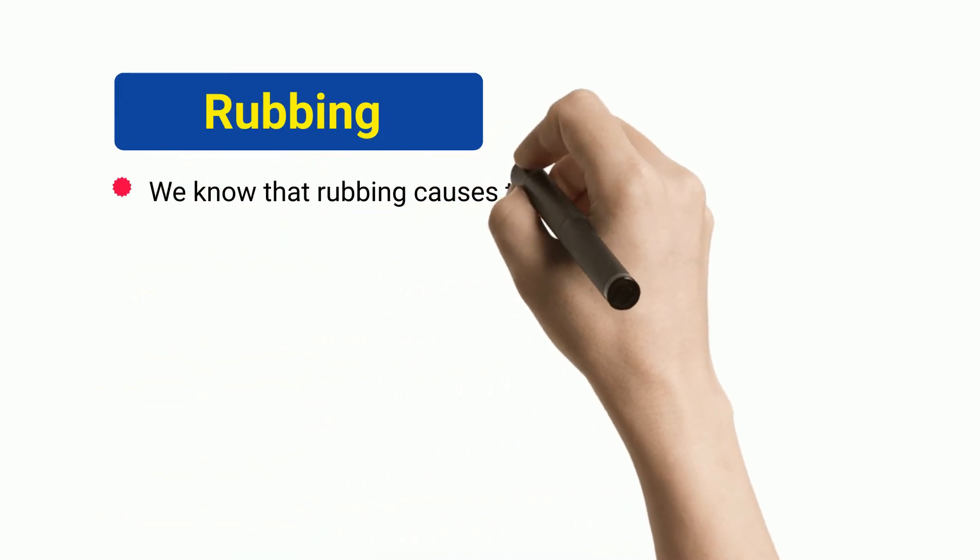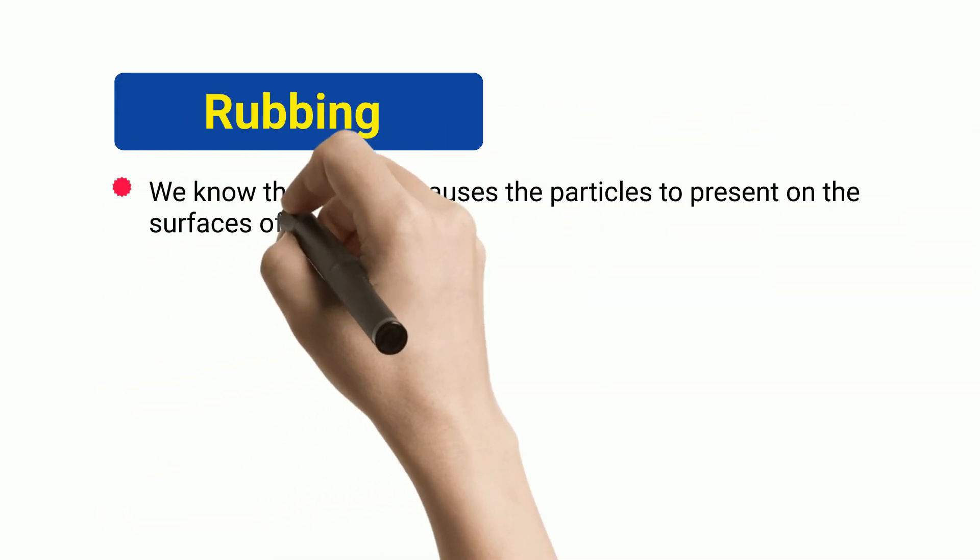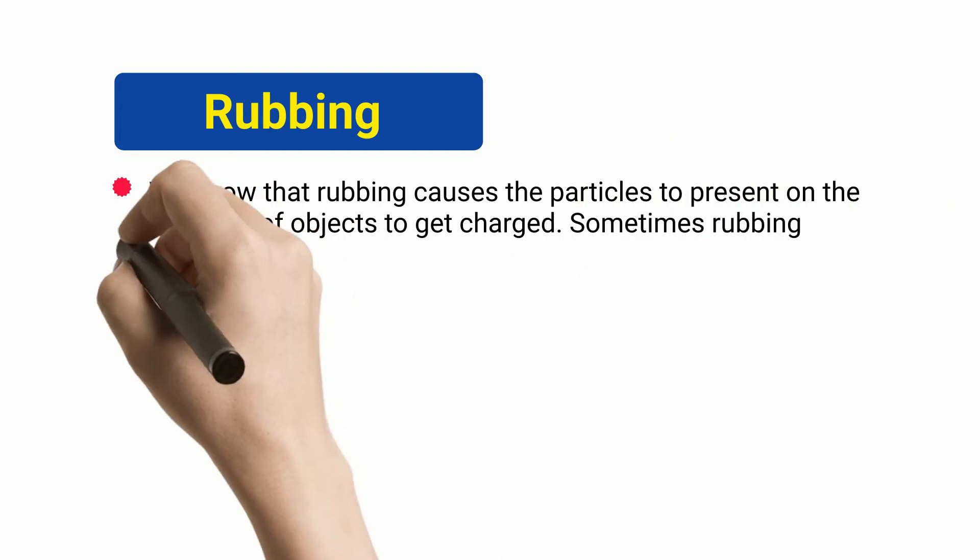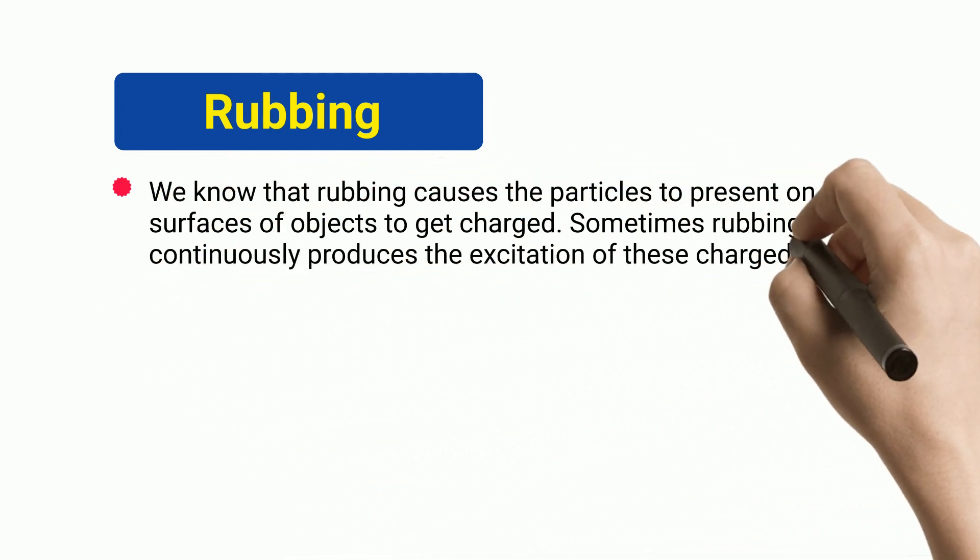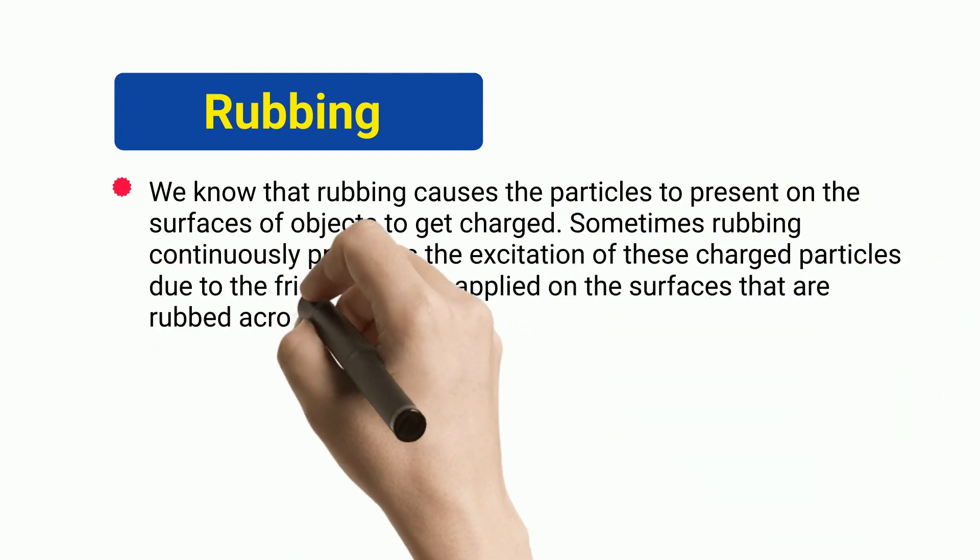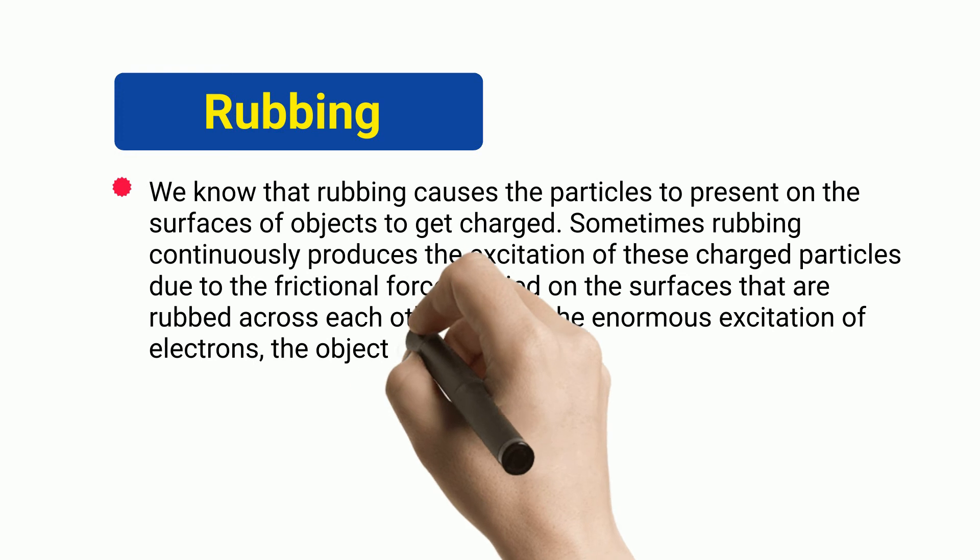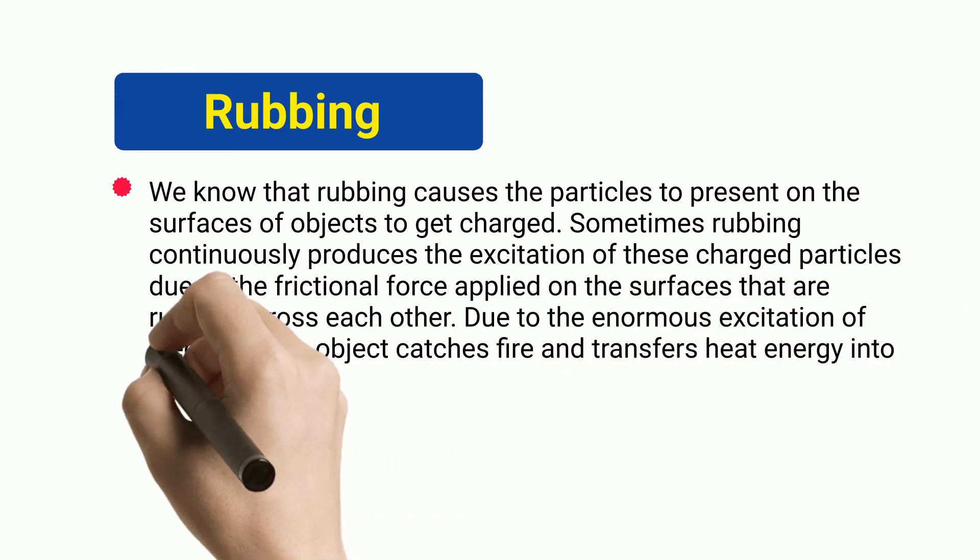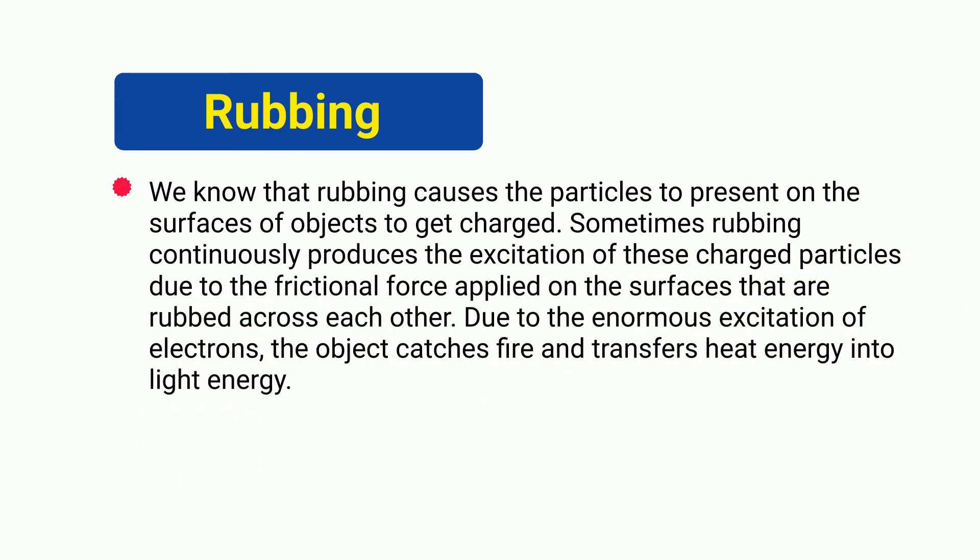Rubbing. We know that rubbing causes the particles present on the surfaces of objects to get charged. Sometimes rubbing continuously produces the excitation of these charged particles due to the frictional force applied on the surfaces that are rubbed across each other. Due to the enormous excitation of electrons, the object catches fire and transfers heat energy into light energy.